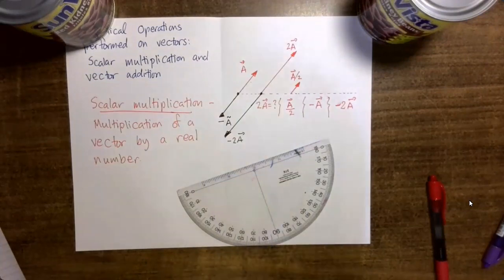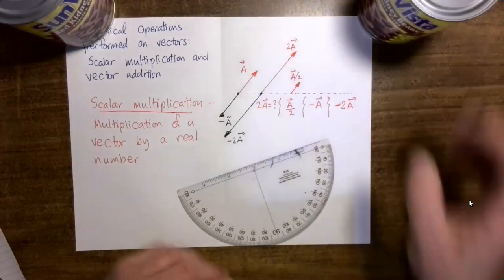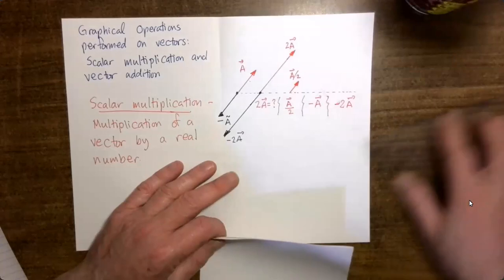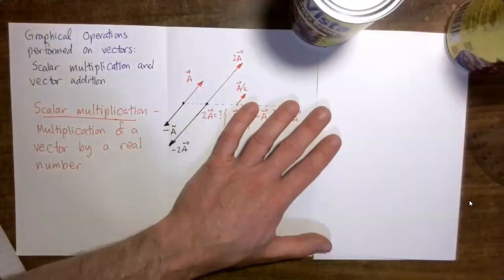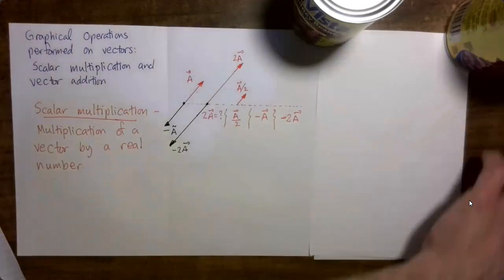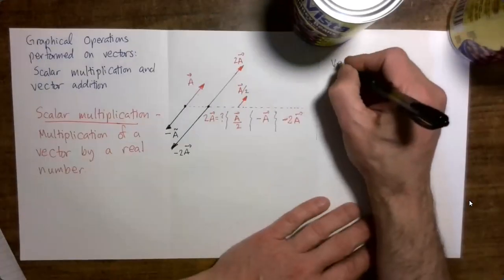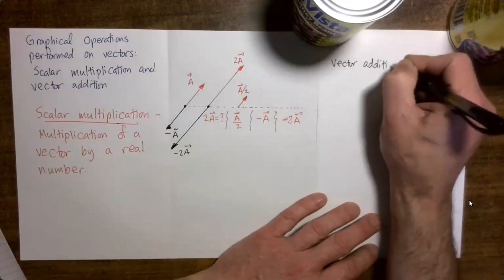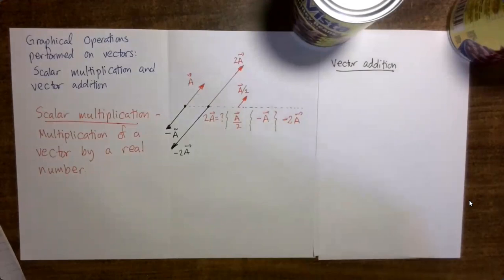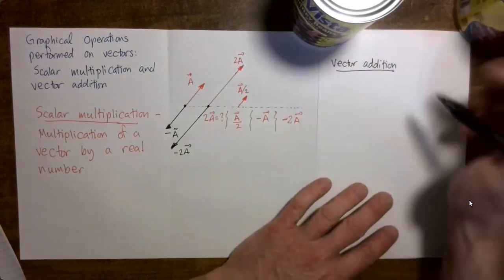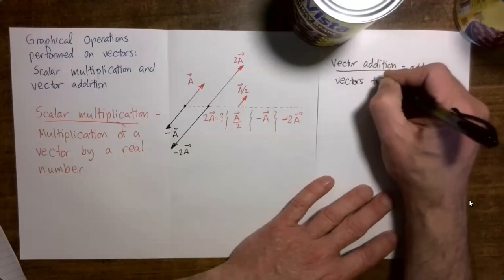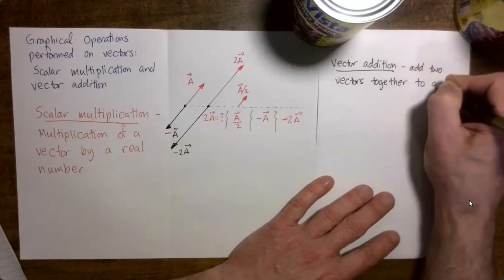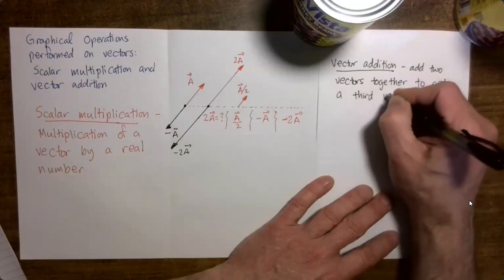The next topic I'd like to discuss is vector addition. Vector addition is another operation that can be performed on vectors graphically without doing any explicit calculations. Later on, we'll learn how to do scalar multiplication and vector addition by explicit calculations, but for now we're just learning how to do those using graphical methods. Vector addition is the addition of two vectors in order to produce a third vector as the sum.